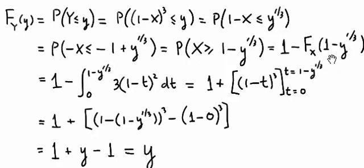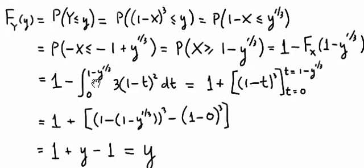So now all we need to do is find the cumulative distribution function of X. We get it by integrating from 0 to 1 minus y to the 1 third power. The PDF of t, which is 3 times 1 minus t all squared, dt.